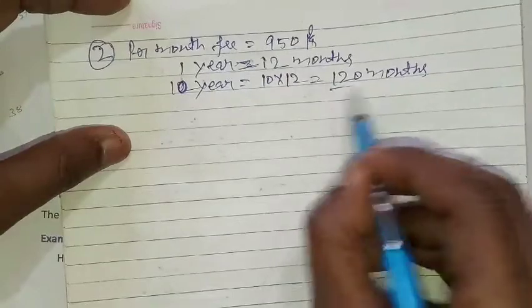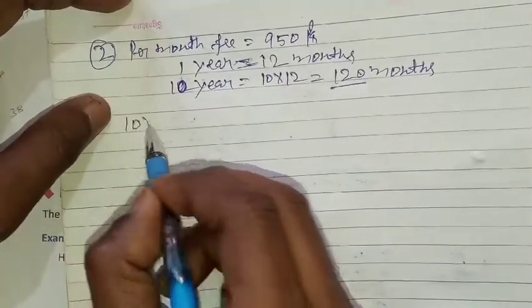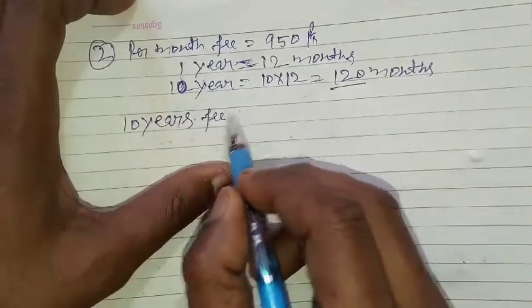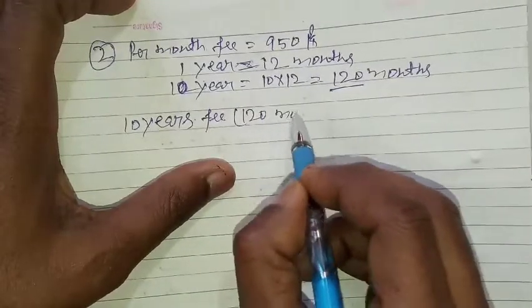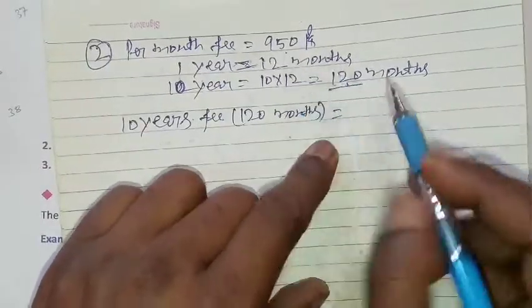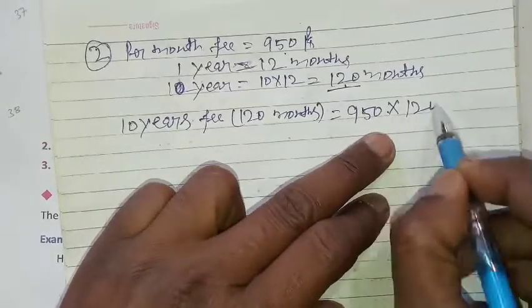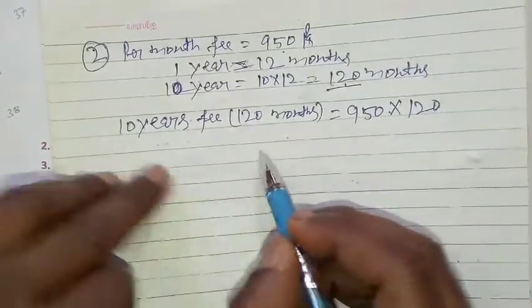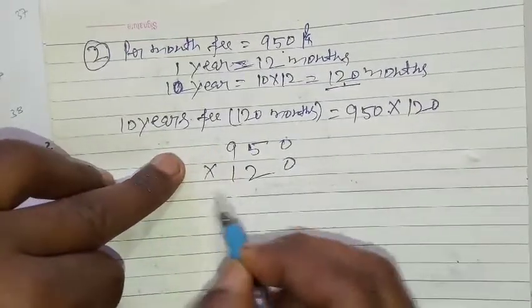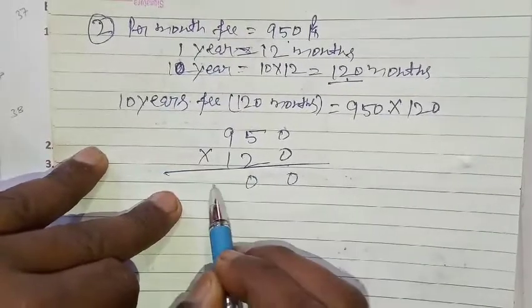So what will be the fee in 120 months? So what do we need to do? That is, 10 years fee. How much will be in 10 year fee? 120 months fee equal to. That means what we have to do in this is multiply it. 950 multiply by 120. Now we will multiply this as well.